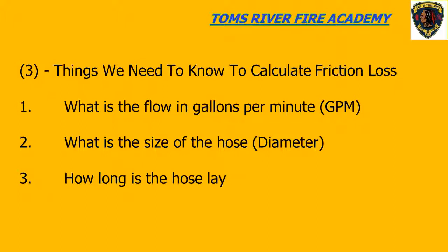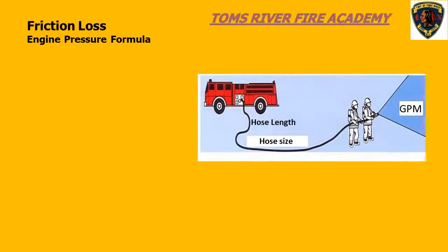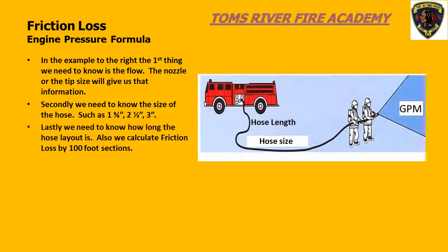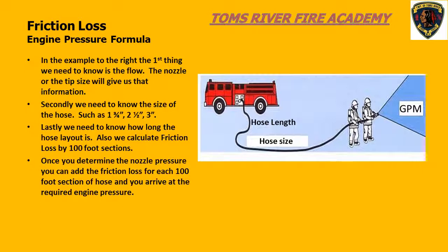In order to calculate friction loss, we need to know three things. First is the gallons per minute, or the flow. Second is the size of the hose in diameter. And the last is the length of the hose lay. In this slide, we can see an illustration of the things we need to calculate friction loss. If we look at the nozzle, that will give us the GPM as long as we have a good understanding of nozzles. Second, we can see the hose size, and lastly, we need to know how long the hose lay is.